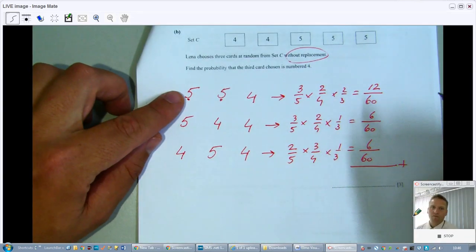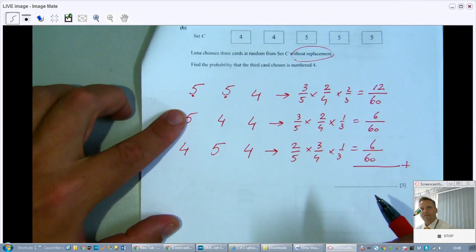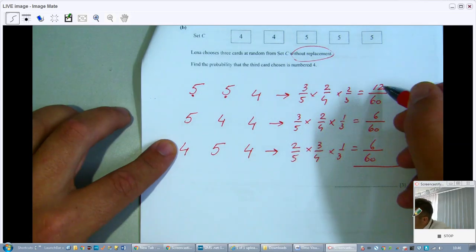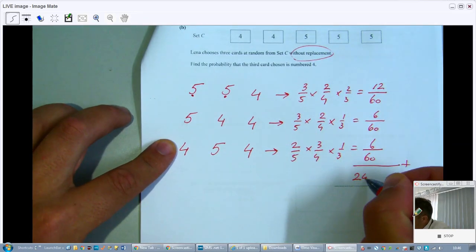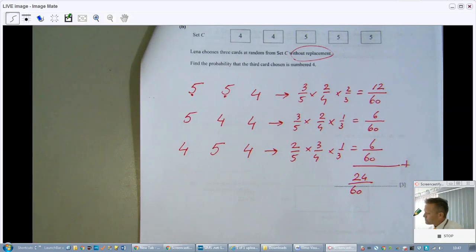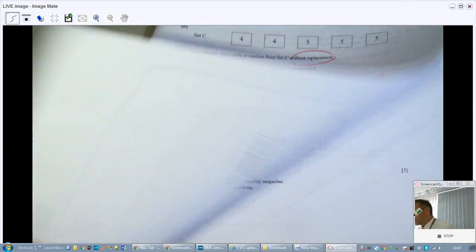It's a 5 and a 5 and a 4, or a 5 and a 4 and a 4, or a 4, a 5, and a 4. So that will be 12, 18, 24 out of 60. Or 12 out of 30, or 6 out of 15, or 2 out of 5. It's all good. But you don't have to simplify those fractions with probability. Good. We continue.